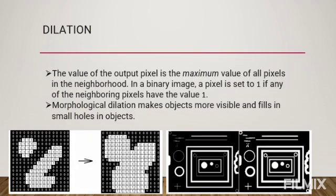Dilation. The value of the output pixel is the maximum value of all pixels in the neighborhood. In a binary image, a pixel is set to 1 if any of the neighboring pixels have the value 1. Morphological dilation makes objects more visible and fills in small holes in the object.